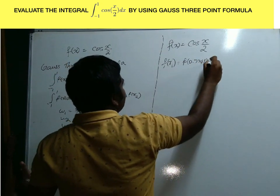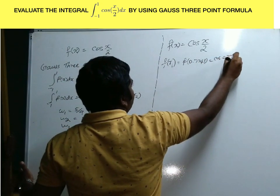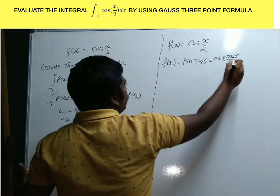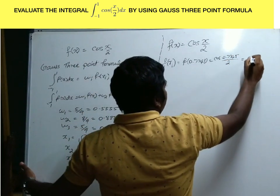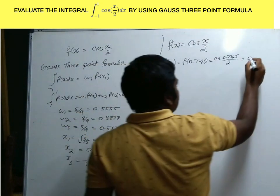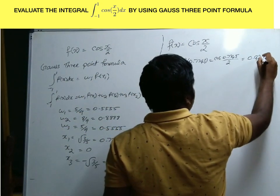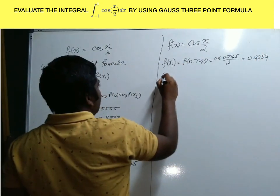Therefore, f(x1) equals f(0.7745), which equals cos(0.7745/2), which equals 0.9259. Then for f(x2).